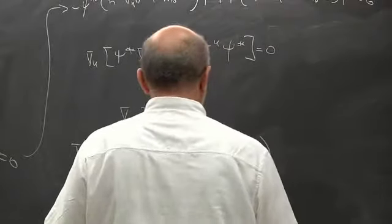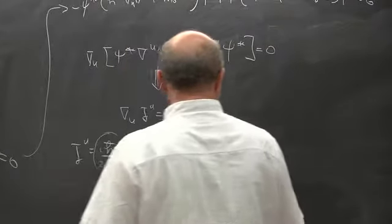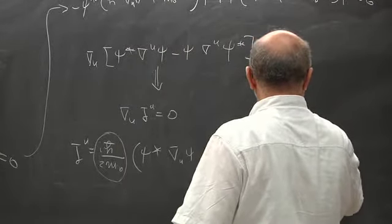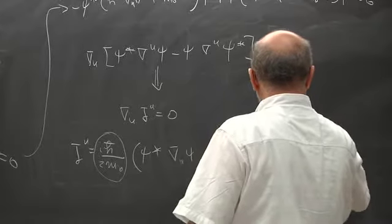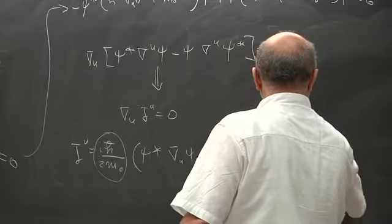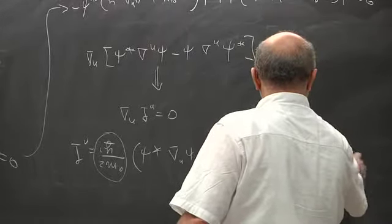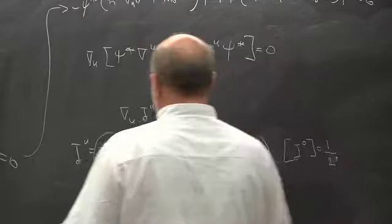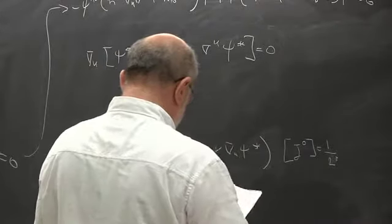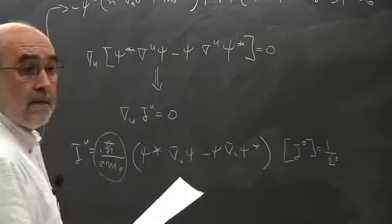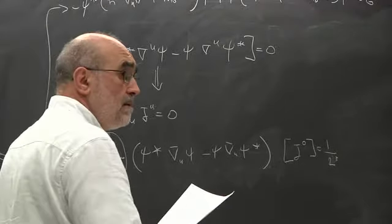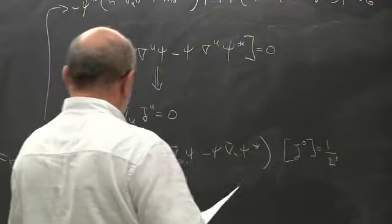The meaning of probability density: if you take j^0 and look at its dimensions, it has units of one over length-cubed. With that factor in front, this is the definition of current density, yes — the four-current j^mu.